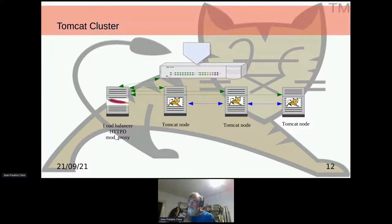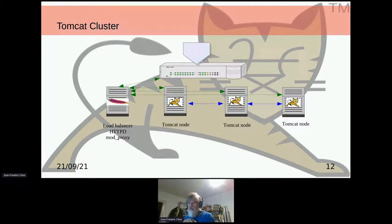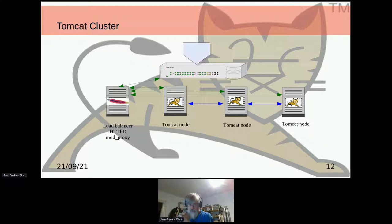A Tomcat cluster is going to be something like what is here on the slide. You have a piece of hardware getting the internet connection, usually going to a load balancer — it could be a hardware load balancer or an HTTP or any proxy. This proxy is going to be connected to all the Tomcat instances, able to forward requests and read responses and forward them to the browser or clients. The Tomcat nodes have to communicate together to exchange session information.